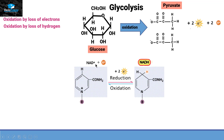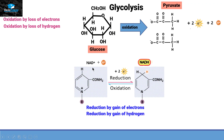Looking at the reaction where NAD+ converts into NADH, this is a reduction reaction. It gains the electrons released from glucose, and it also gains hydrogen — both are criteria for reduction. The oxidation number of NAD+ is +1, while NADH has no charge, so its oxidation number is zero, meaning the oxidation number decreases, confirming this is a reduction reaction.